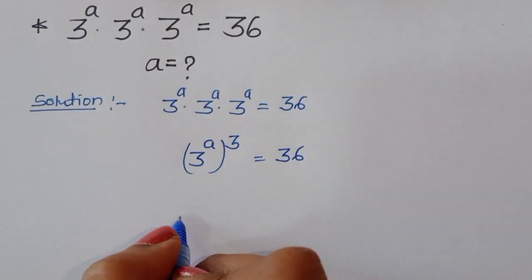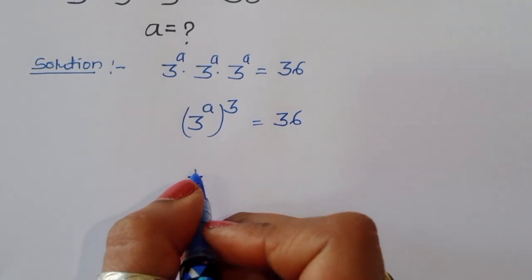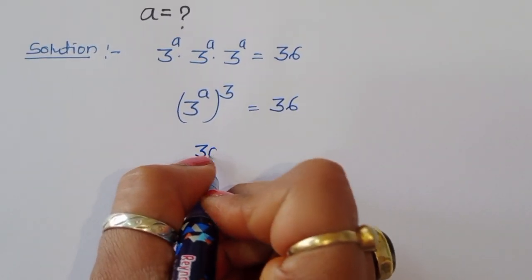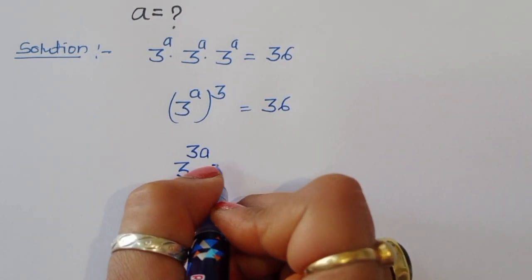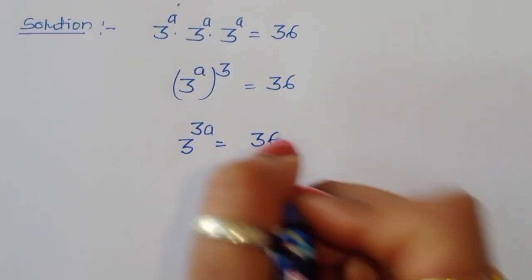Now we can write this as 3 power 3A, so 3 power 3A is equal to 36.